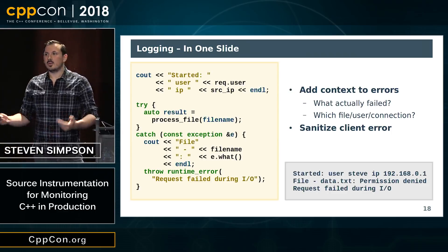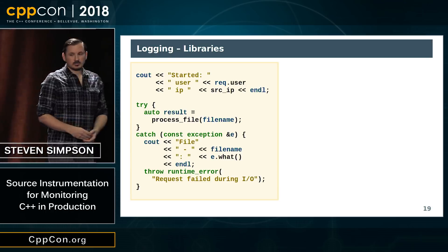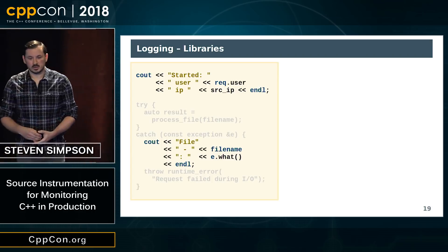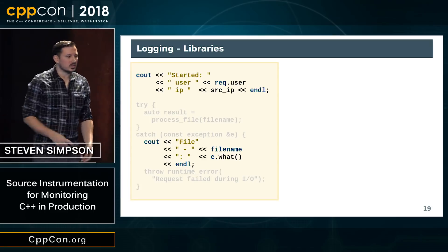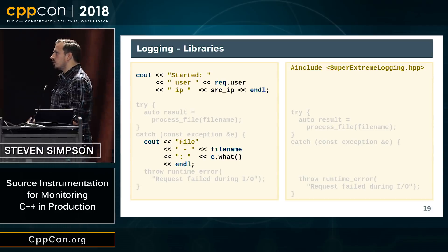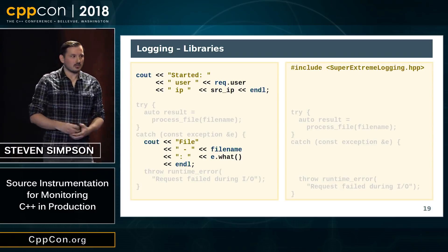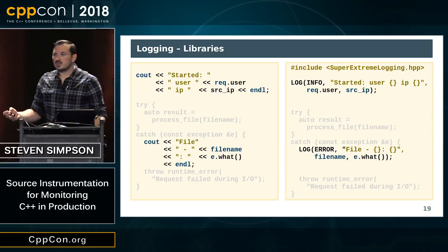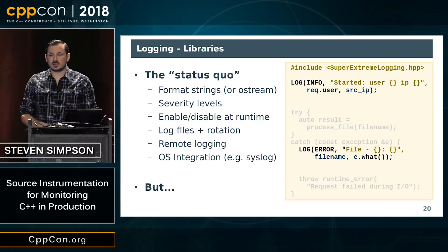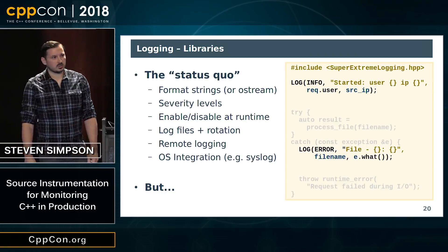So this is a good start — now we have a lot more information and maybe we can work out what went wrong. At some point we'll think we're definitely logging now, so we should use a logging library and be professional about it. Maybe we use something from our package manager, maybe we write one ourselves, maybe the company has their own logging library. Whatever it is, it's going to look a bit like this — maybe you get some ability to use format strings, you can specify severity levels, and it'll have lots of useful features for writing log files and maintaining them.